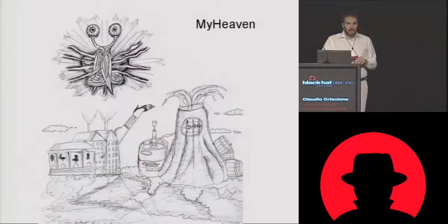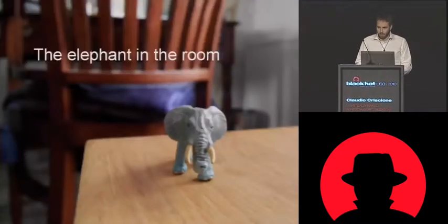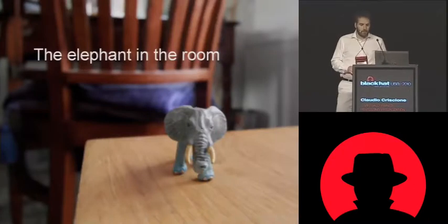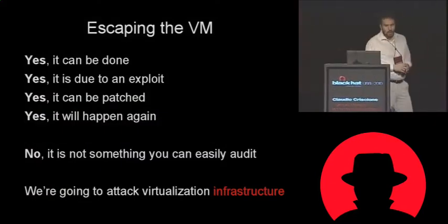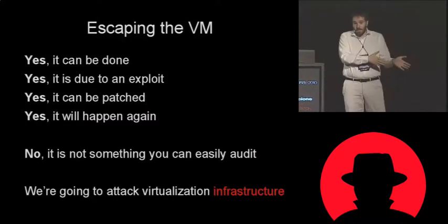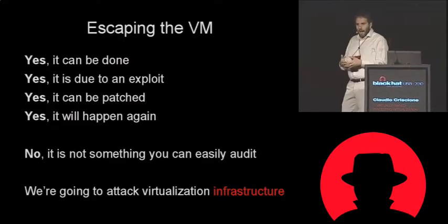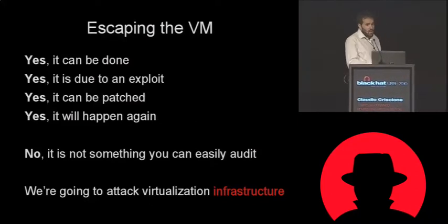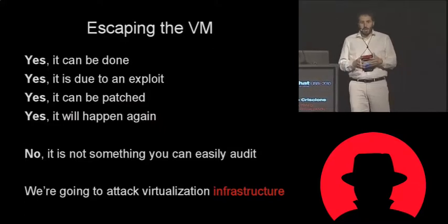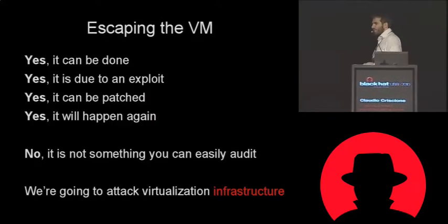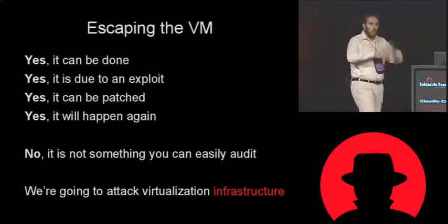Since we are speaking about virtualization, I guess you're all expecting that I speak about something in particular. Let's speak about the elephant in the room. This talk will not be about escaping the VM. First of all, because I'm not able to — but there is another reason. Yes, escaping the VM can be done; it has been done in the past. You can go from the virtual machines to the host systems. But it will be due to a bug, an exploit likely — not a design issue. It can be patched, and it will happen again in the future. But from a pentesting perspective, it doesn't really matter that much. What you want to do as a pentester is to start with an IP address range and own whatever you find. That's what my customers tell me: here are the IP addresses, go, pentest.